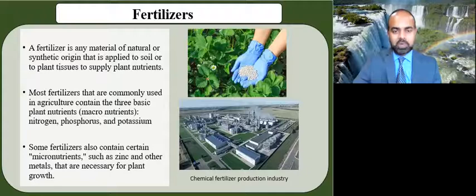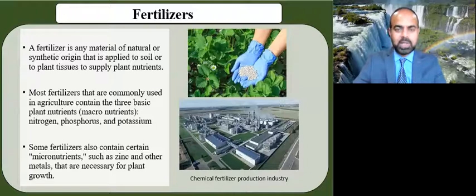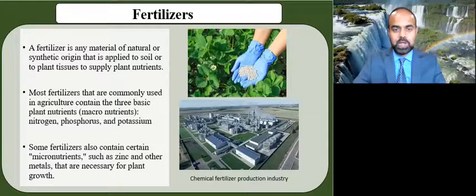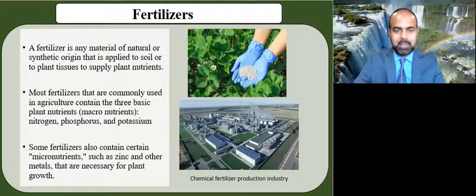Most of the fertilizers commonly used in agriculture contain three macronutrients — the three basic nutrients that plants need: nitrogen, phosphorus, and potassium.